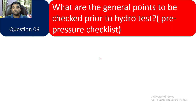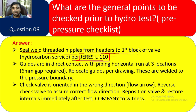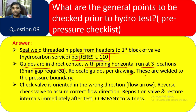Question 6: What are the general points to be checked prior to hydrotest? Answer: Seal weld threaded nipples from header to first block of valve — note this is per Aramco standard, so check your client/project specification. Guides are in direct contact with piping on horizontal runs at three locations — a 6 mm gap is required; relocate guides. Check valves welded to the pressure boundary are oriented in the wrong direction.